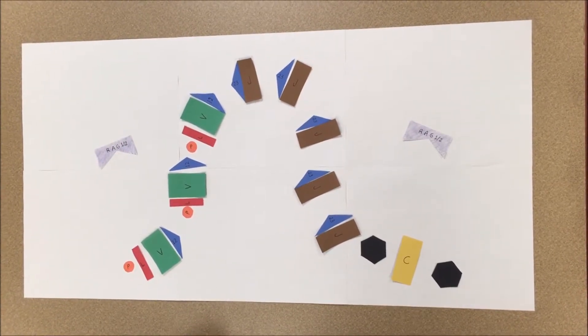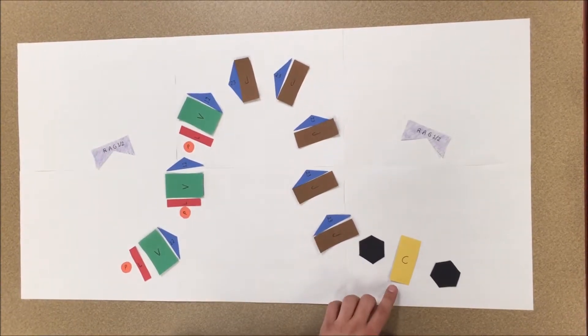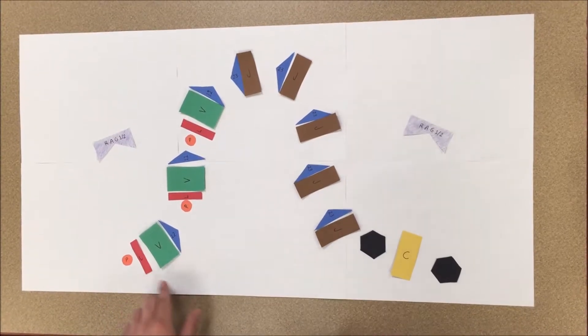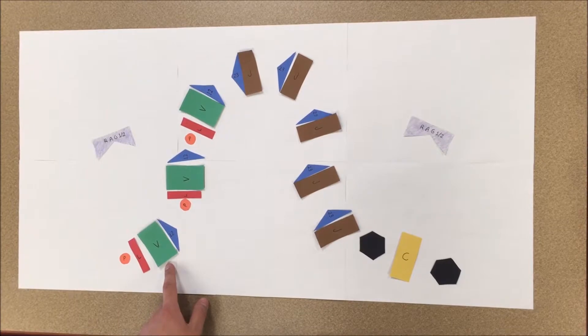The display gene contains three variable regions, five joining regions, one constant region, enhancers, promoters, and leader regions. A promoter and a leader region precede each variable region.